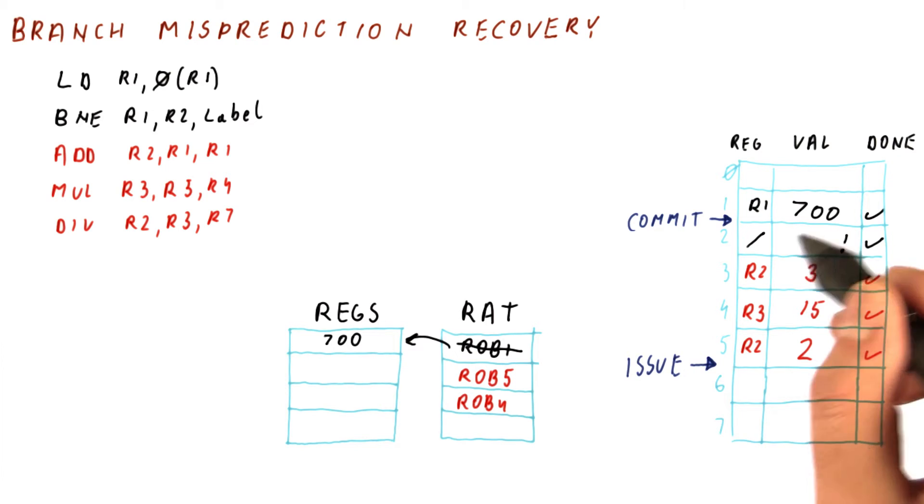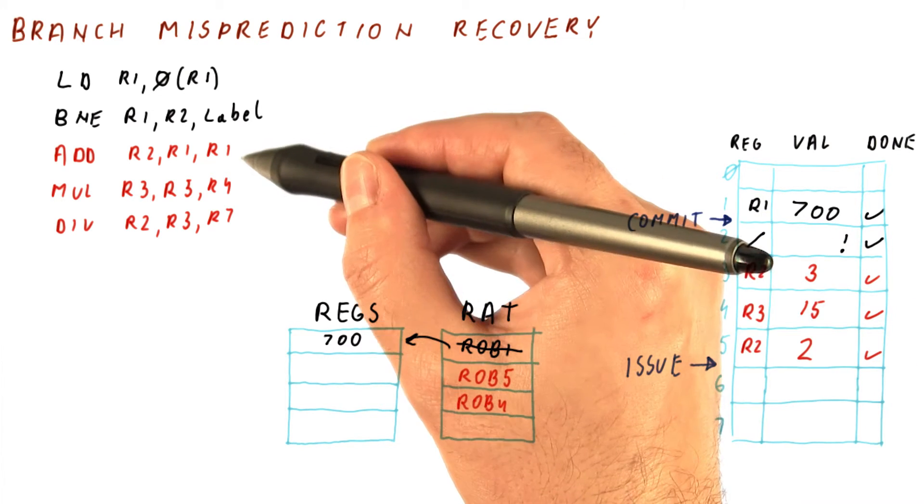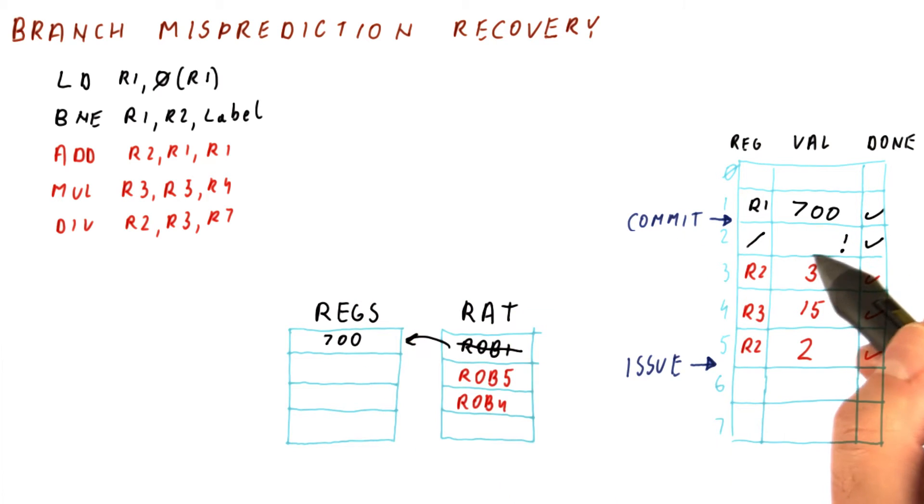So when we commit this branch, we realize that after this branch, we were fetching the wrong instructions. The PC that the branch should have created is different from the PC we have actually used.